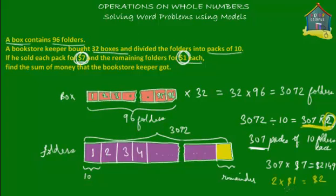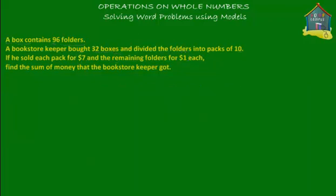So in the end, how much did he collect altogether? He sold the 307 packs for $2,149 and the remaining two folders for $2. So totally he made 2149 plus 2, which equals $2,151. The bookstore keeper got $2,151.